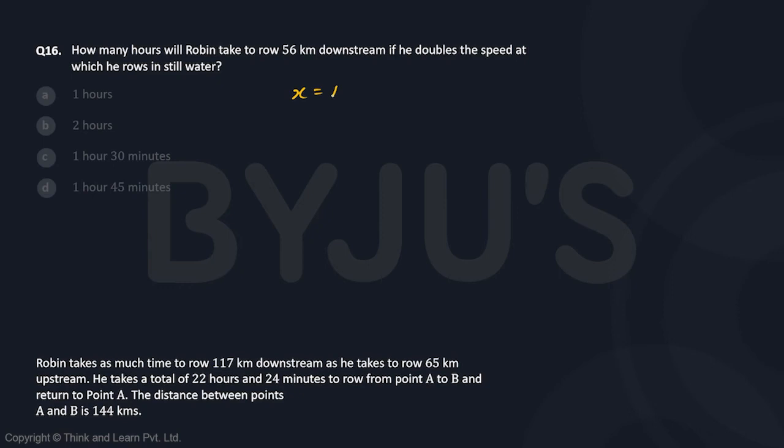So he's going downstream. Originally the value of X that we calculated was 14 and the value of Y was 4. Now if he doubles the speed at which he rows in still water, that means the value of X is doubled and now it is equal to 28. So the net speed downstream will be equal to 28 plus 4, that is 32 kilometers per hour.